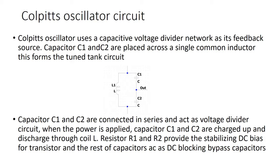The Colpitts oscillator uses a capacitive voltage divider network as its feedback source. Capacitors C1 and C2 are placed across a single common inductor, which forms the tuned tank circuit. C1 and C2 are connected in series and act as the voltage divider circuit. When power is applied, C1 and C2 are charged up and then discharge through the coil.